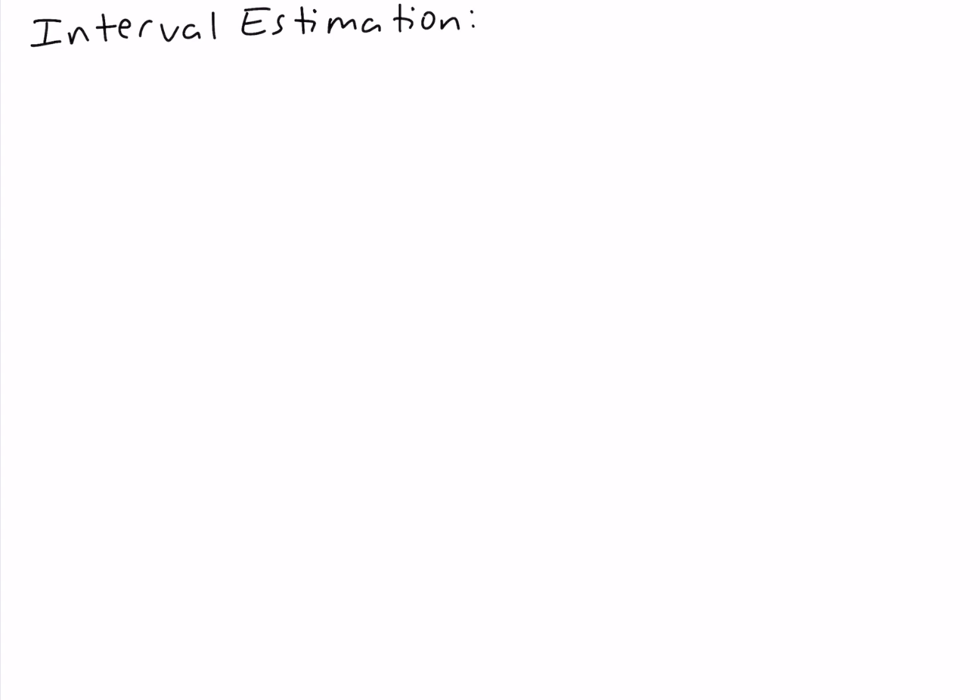Interval estimation. In interval estimation, we're trying to construct an interval or range of values that our population parameter is likely going to be in. For example, we want to create a range of values that our population mean or population proportion has a high likelihood of being inside of.